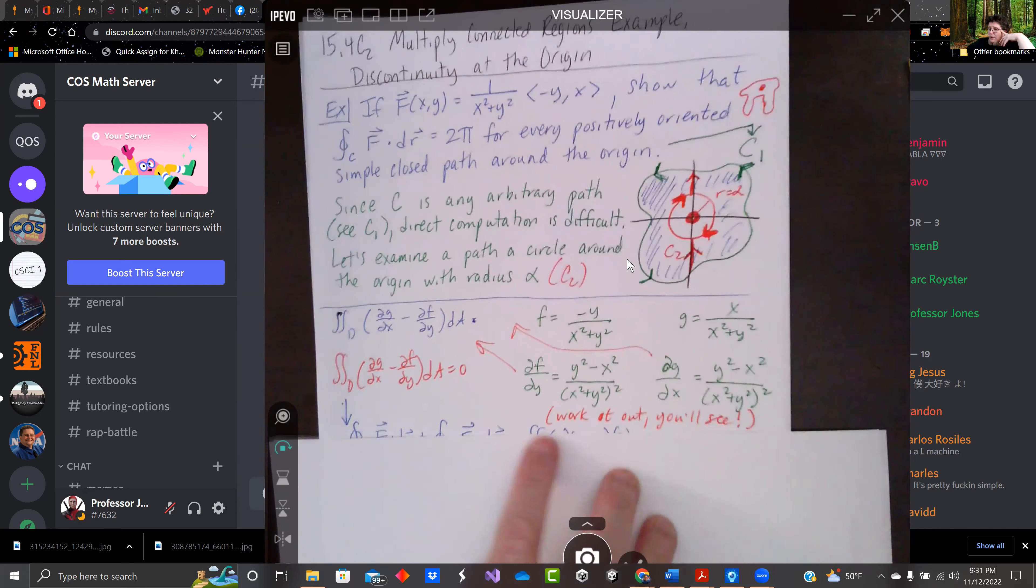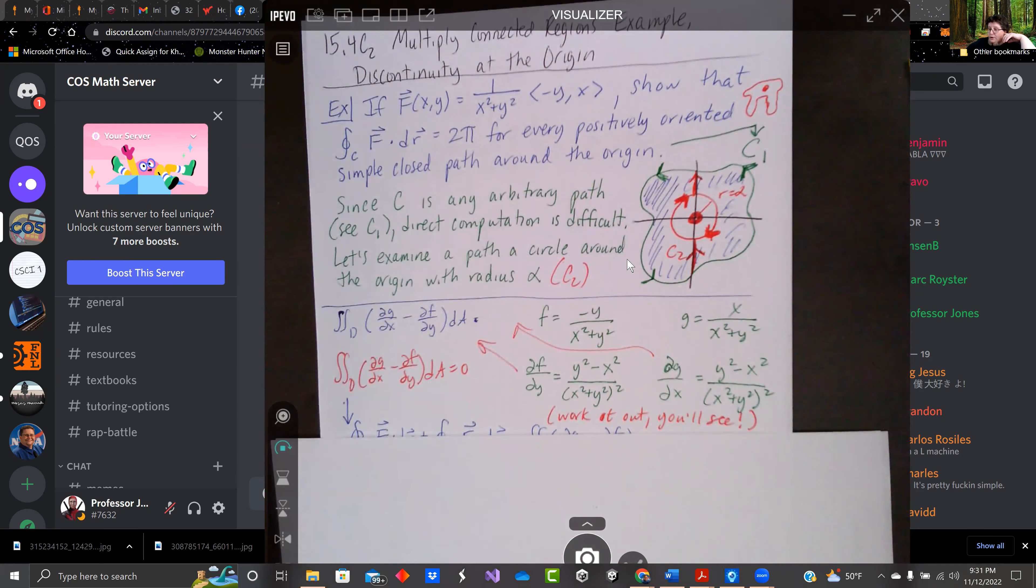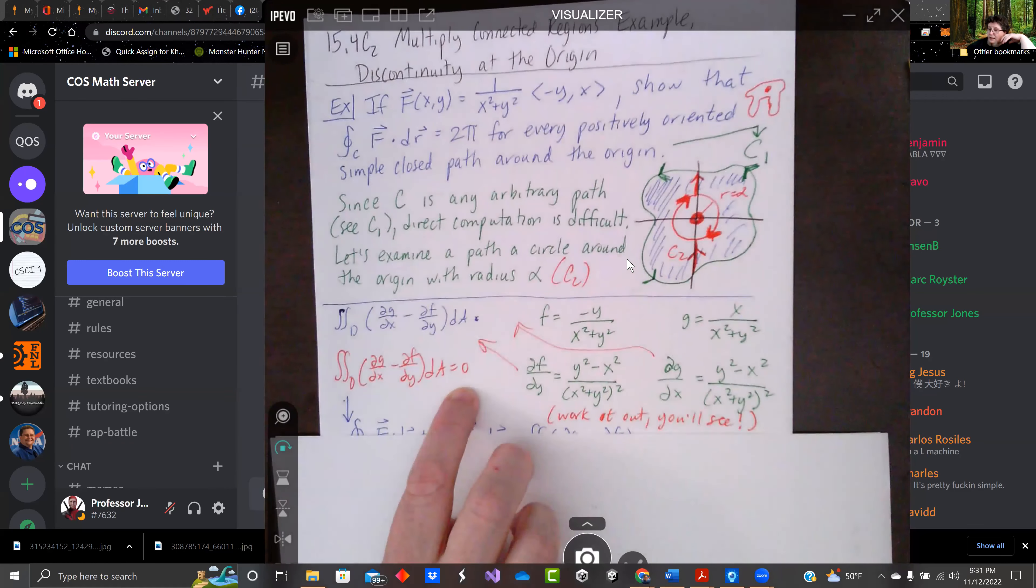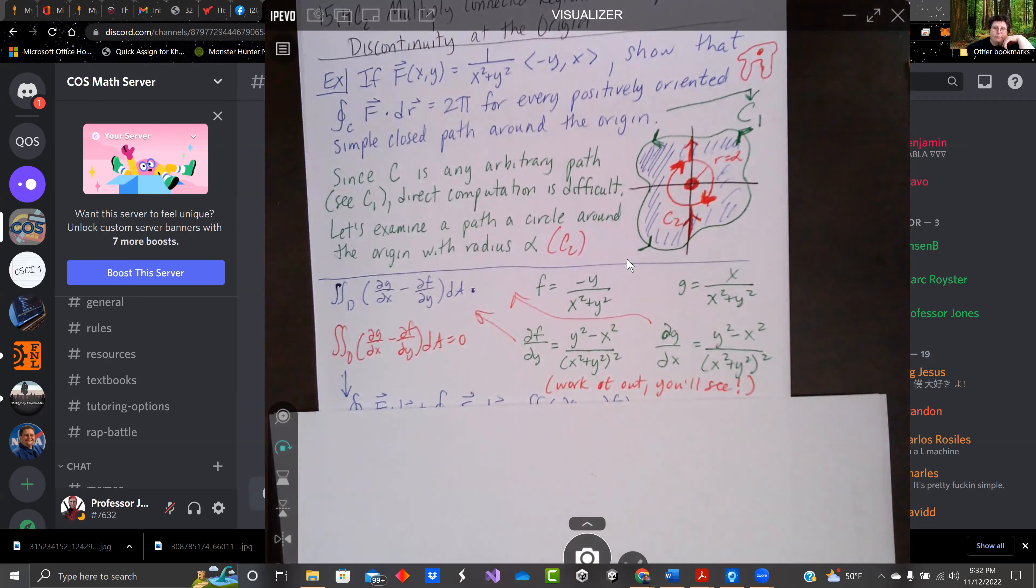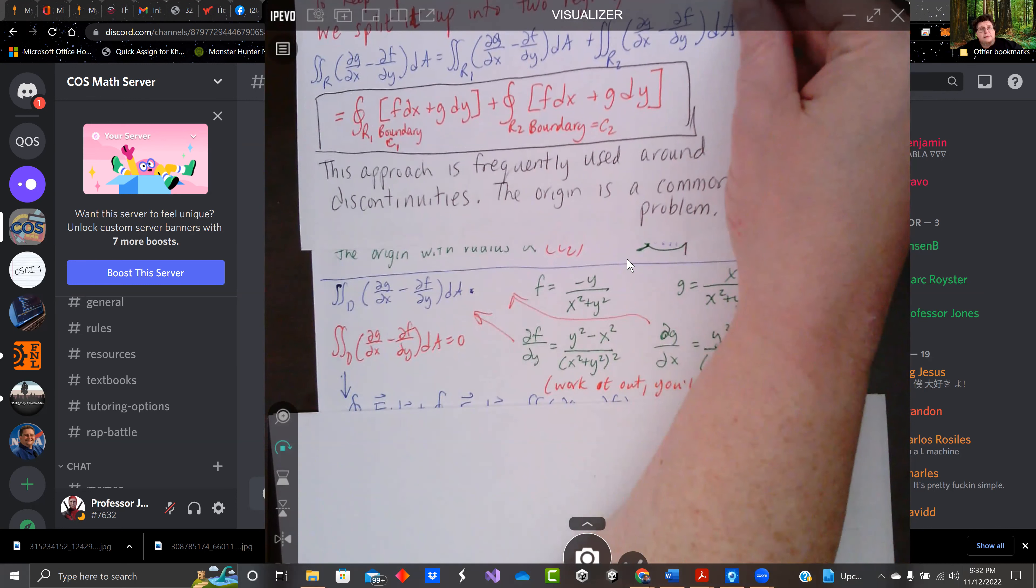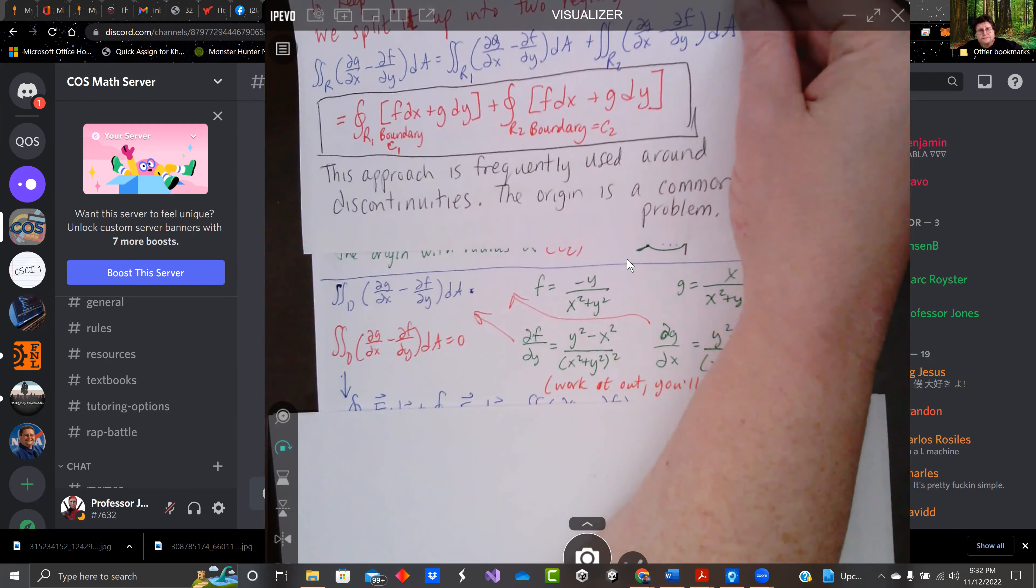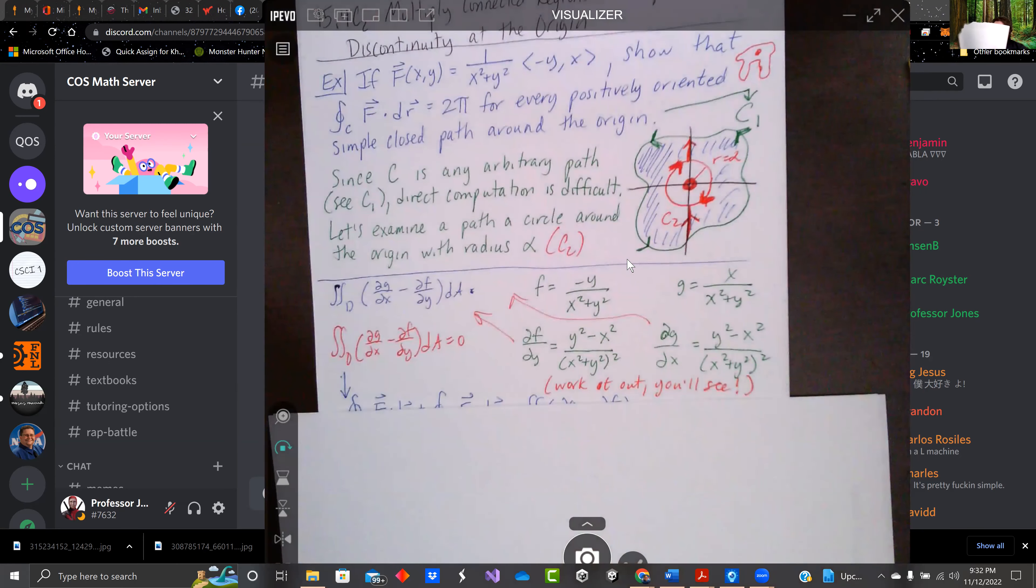So if we plug in df/dy and dg/dx into our Green's theorem, we're going to show it equals zero. So using that multiply connected regions idea, where we're going to add the two boundaries, the closed integral around the two boundaries, we're going to use that approach here to show that we get 2π.